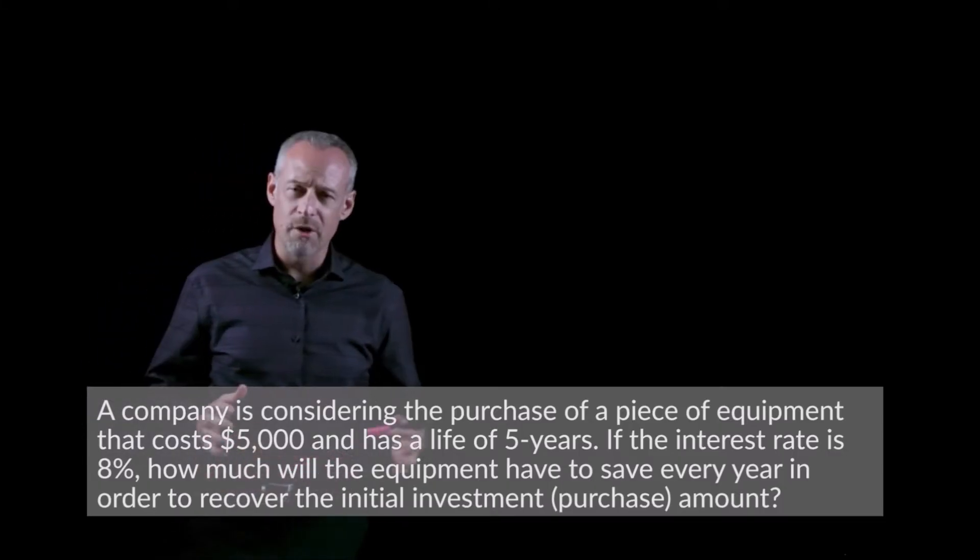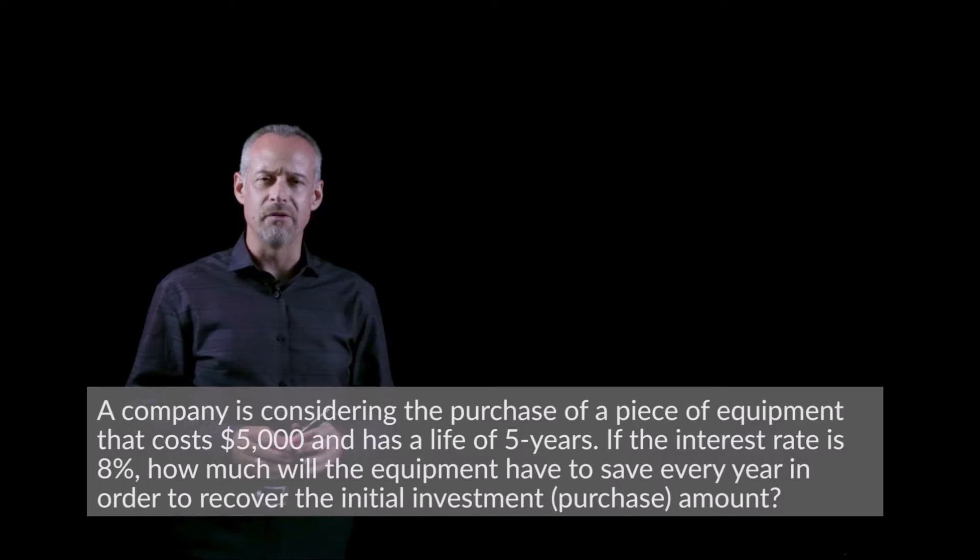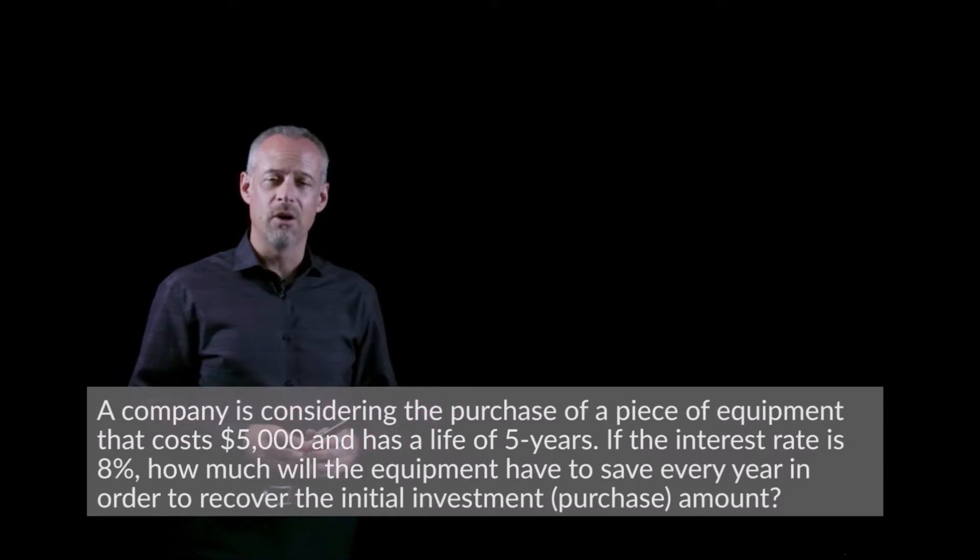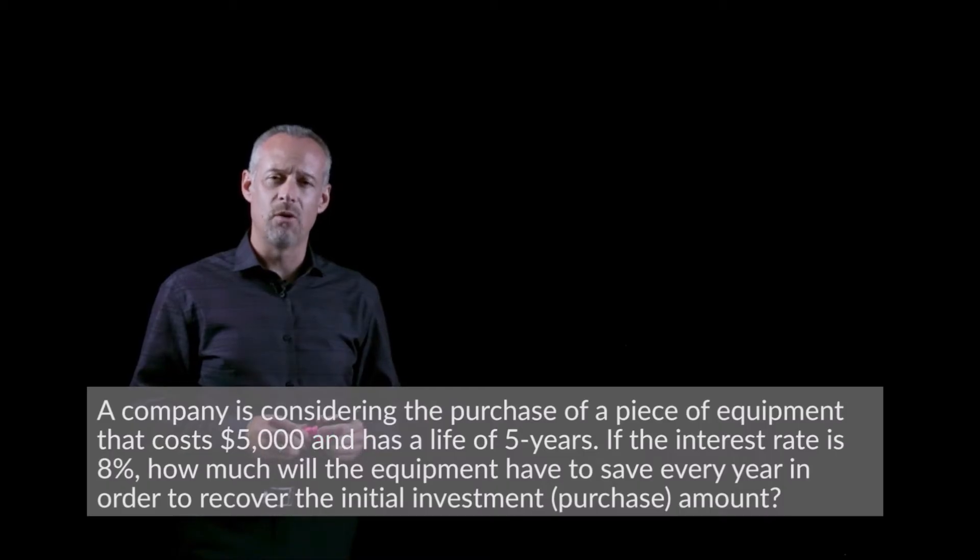In this problem we learn about a company that's wishing to make an investment in a piece of equipment and the hope is that that piece of equipment will have a certain payback over a term of five years. So what we get from the problem is the amount of the investment, sometimes we call that a capital investment, and what we'd like to know are what are the savings that need to be produced by this equipment that are exactly equivalent to the initial investment.